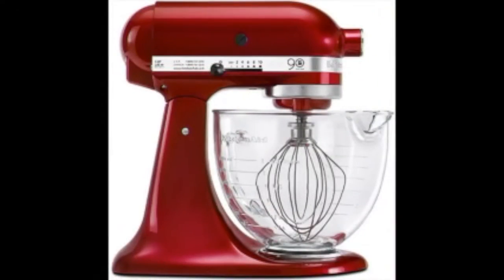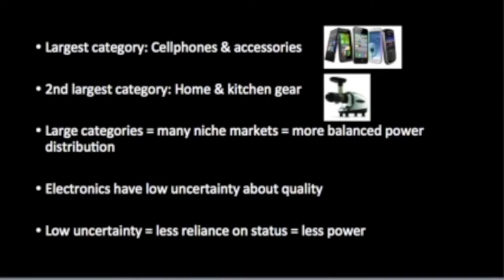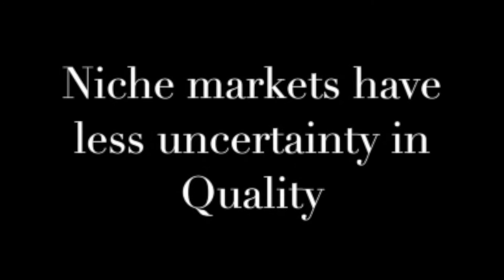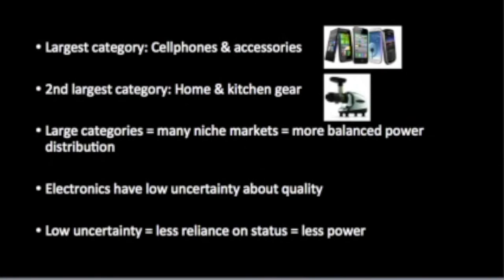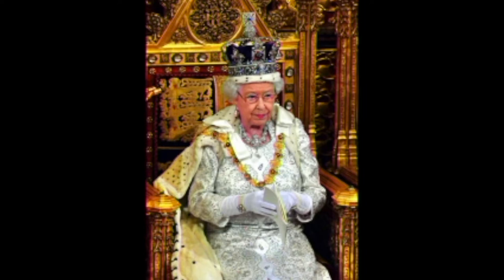The largest and second-largest categories on Amazon are cell phones and accessories and home and kitchen gear. The power distribution is more equivalent between companies in these categories. Amazon forces sellers to find niche markets, giving buyers a wider selection of products and reducing the power differential within categories. Quality uncertainty is much reduced here, as companies tend to focus on the functionality of their products. They may achieve a good reputation, but no difference is made to their status. Companies that achieve a good reputation gain less power than those of high status, since status is based on prestige and importance. On Amazon, power is actually based on reputation rather than status, at least in the largest categories.